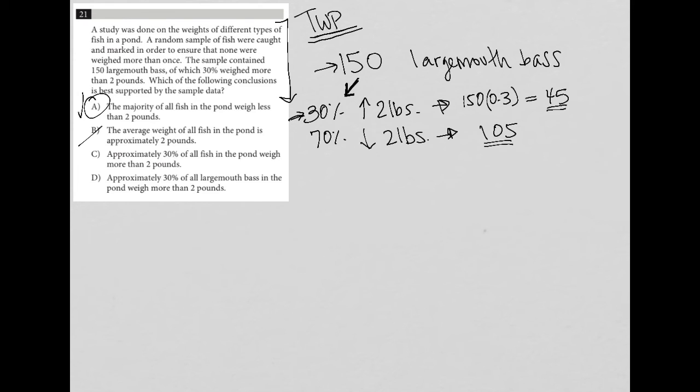Choice C: approximately 30 percent of all fish in the pond weigh more than two pounds. That's a decent answer as well. The only issue, however, is we're told the study takes weights of different types of fish, but the information provided is only about largemouth bass. So 30 percent of all fish in the pond? No. We can say 30 percent of largemouth bass are more than two pounds, but not all fish.